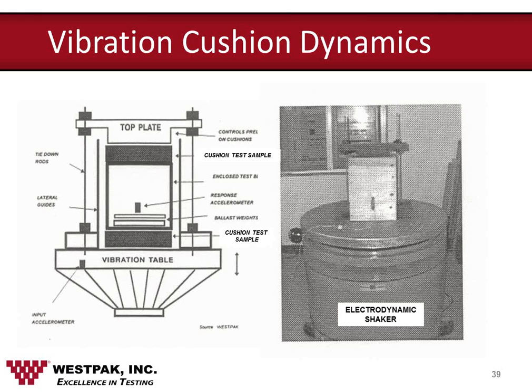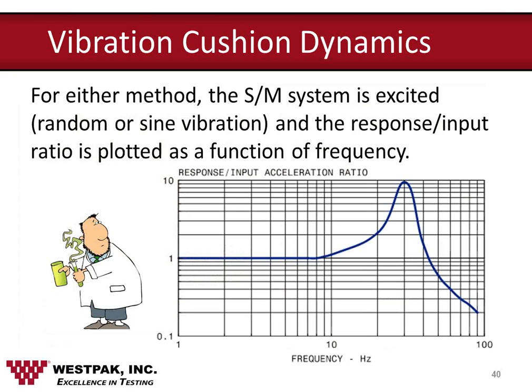This slide shows a schematic of the test setups on the left-hand side and the actual test block fastened to the table of an electrodynamic vibration machine on the right side. The system is quite simple and easily adapted to this kind of testing. Using any of the methods previously described, the spring mass system is excited sinusoidally or with random vibration, and the response/input ratio is plotted as a function of frequency. This results in our familiar transmissibility plot, showing the start of amplification, the peak as determined by the damping, and then the beginning of attenuation at a particular frequency.